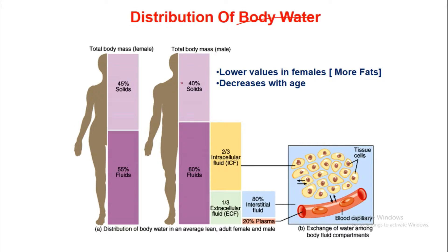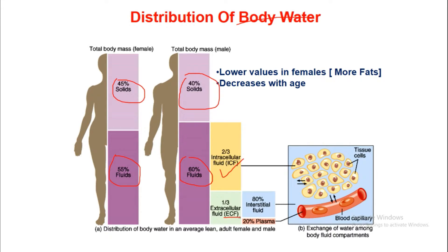Looking at the distribution of body water: in males, 40% of total body mass is solids and 60% is fluids, while in females, 45% are solids and 55% are fluids. Of the 60% fluid, two-thirds is intracellular fluid (ICF) and one-third is extracellular fluid (ECF).